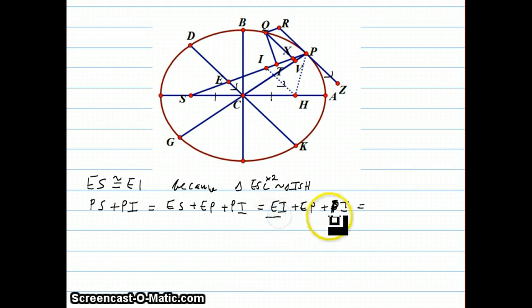But EI plus PI, if you look at the picture, EI plus PI is the same thing as EP. So we have equals two EP. So we can summarize this fact by saying that EP is half of PS plus PI.